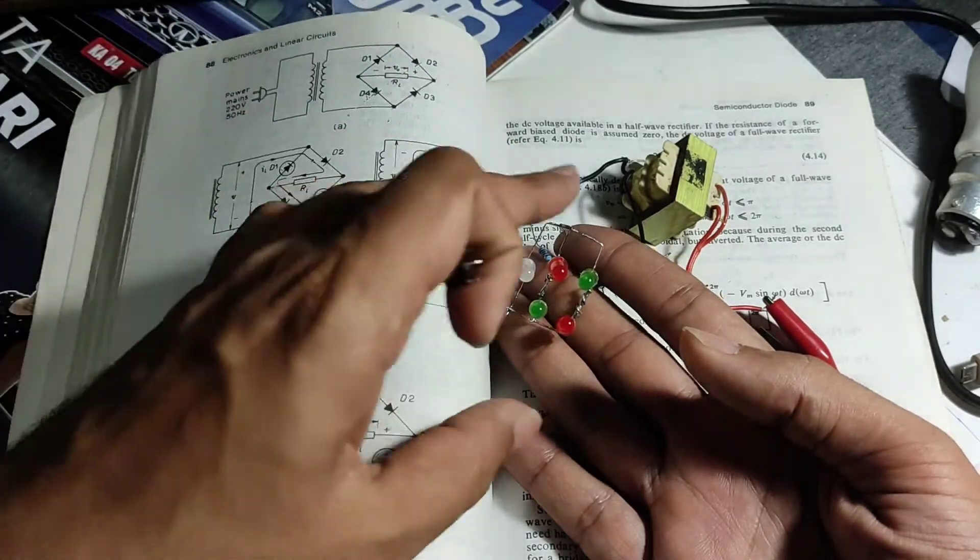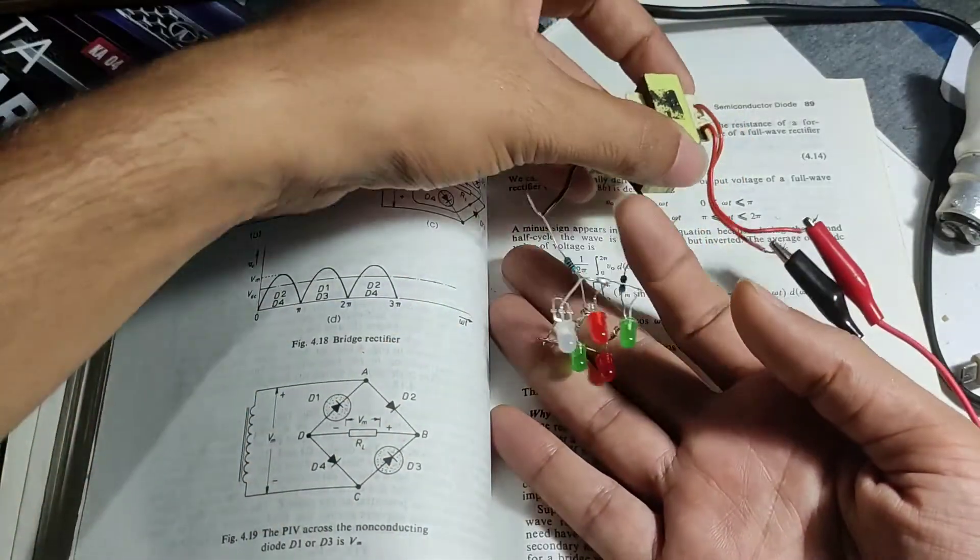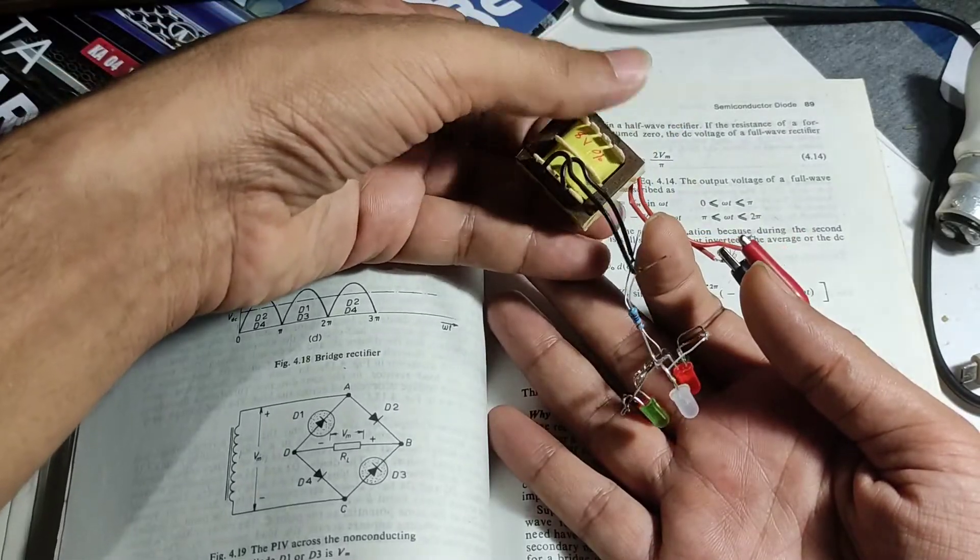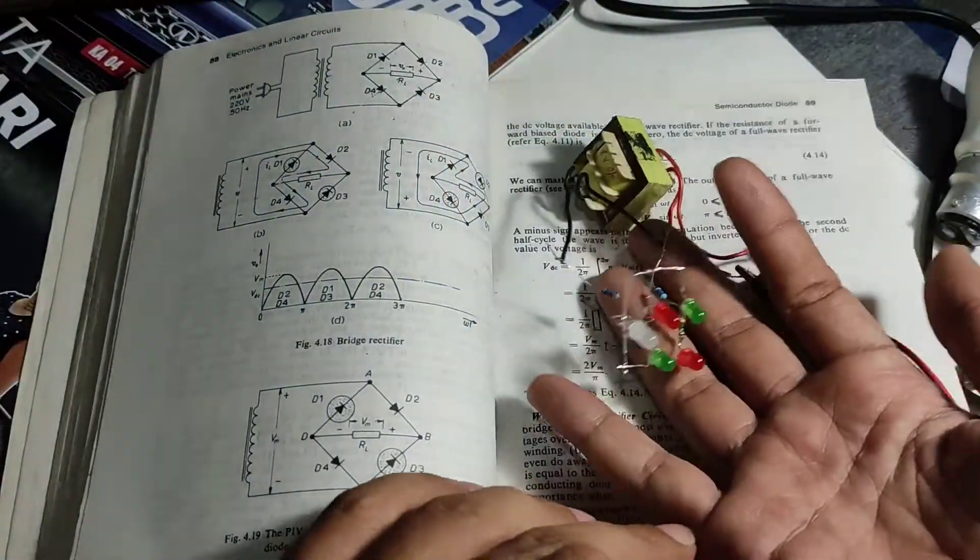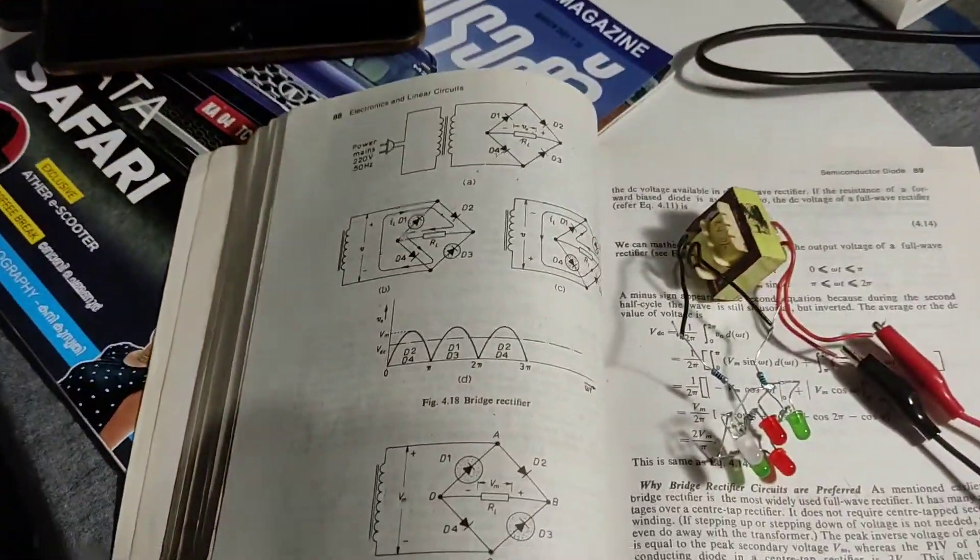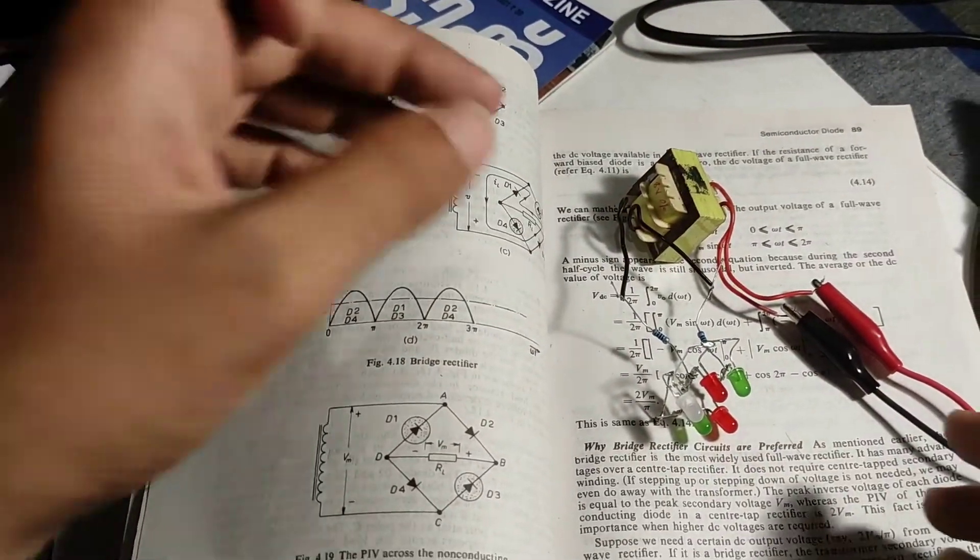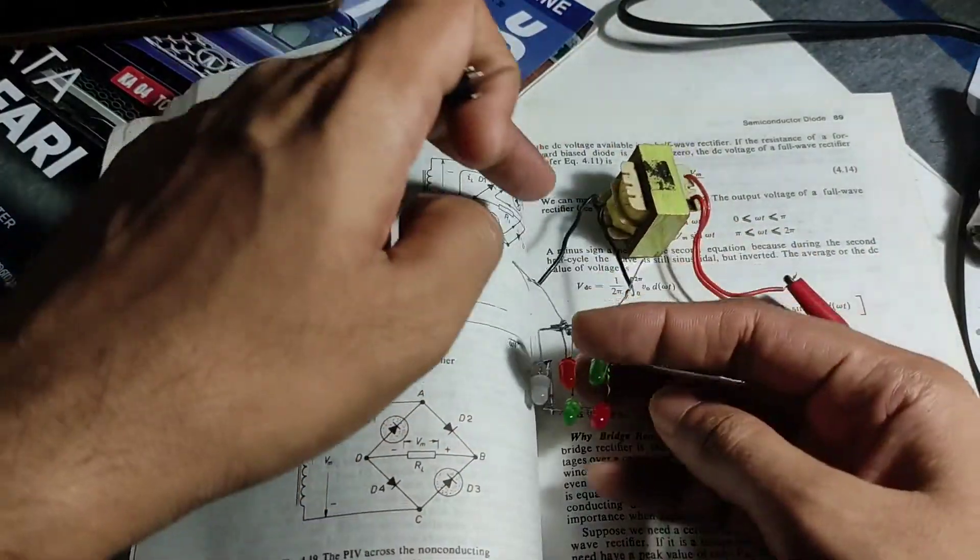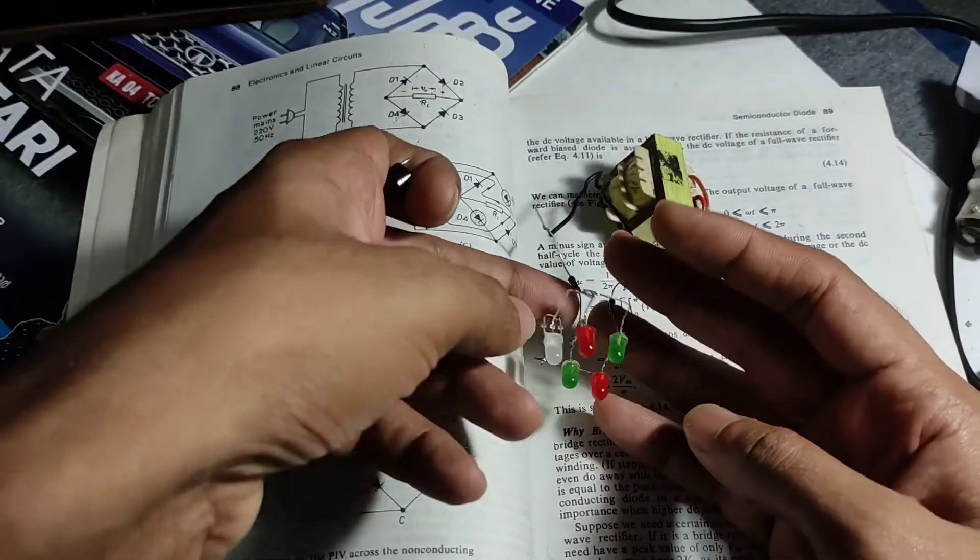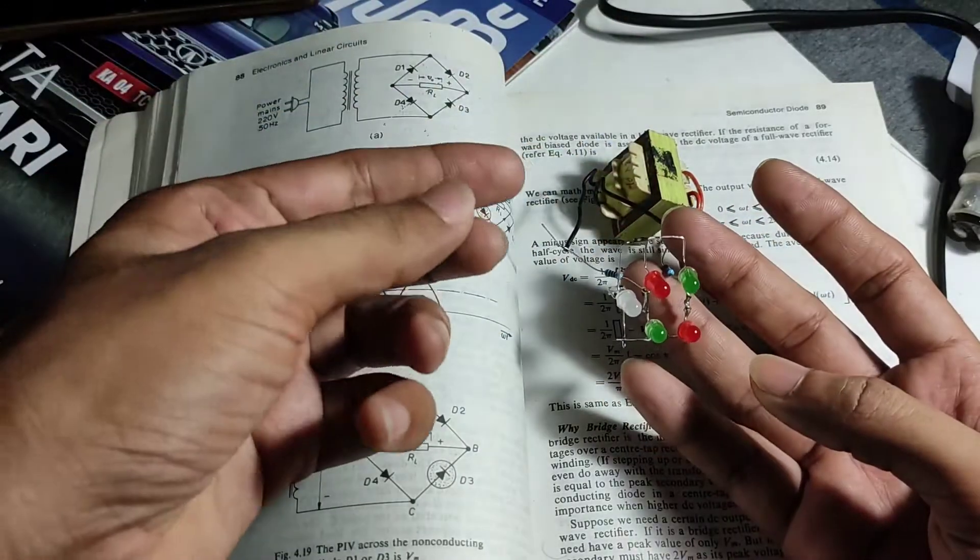Let me explain the setup. Here I have a step-down transformer - this is an 8-volt output transformer which is connected to my isolation transformer up there. At the output here I have two current limiting resistors.